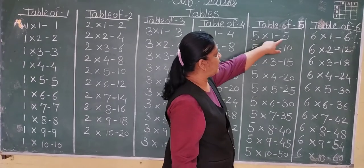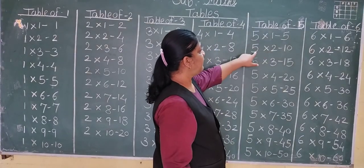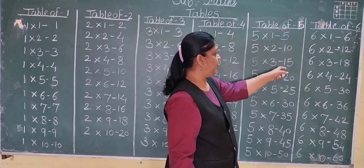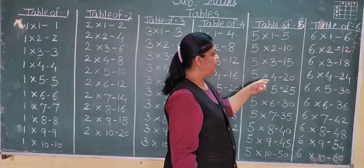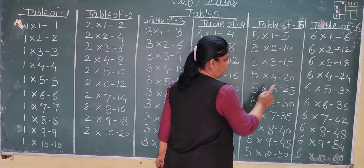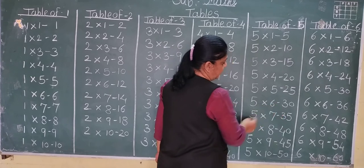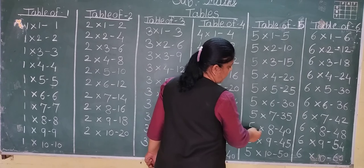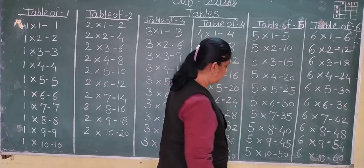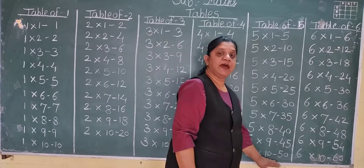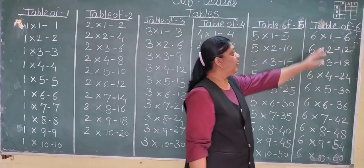Now table of 5: 5 ones are 5, 5 twos are 10, 5 threes are 15, 5 fours are 20, 5 fives are 25, 5 sixes are 32, 5 sevens are 35, 5 eights are 40, 5 nines are 45, 5 tens are 50.